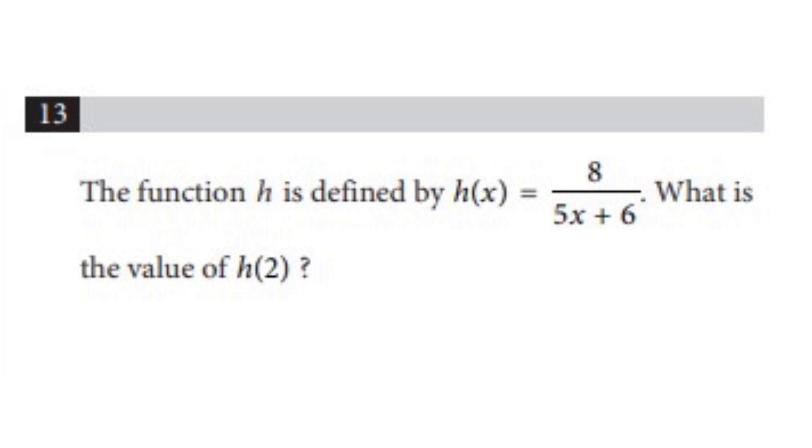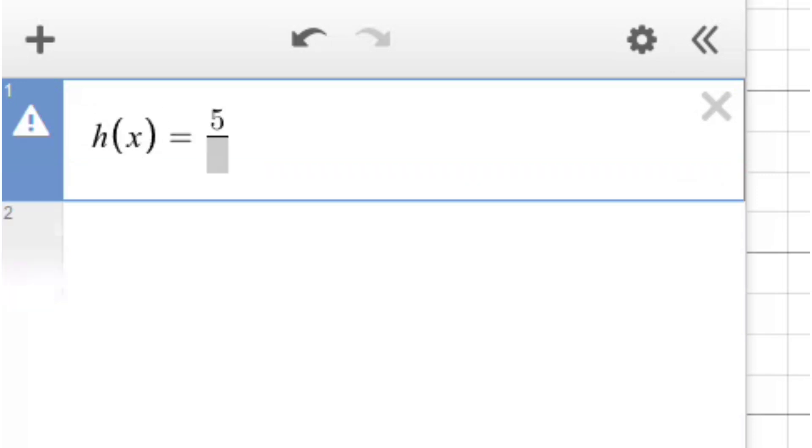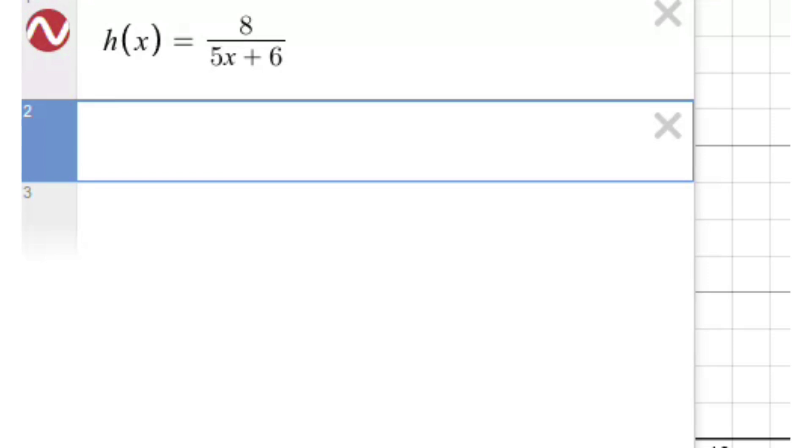In the SAT, you might get a question which gives you a function and then asks you to get the value of the function for a certain input. For example, in the question, h of x equals 8 over 5x plus 6 and the question wants us to find the value of h of 2. We simply define this function in Desmos and then put h of 2 in the next line. It'll spit the right answer to us and one question solved using Desmos.